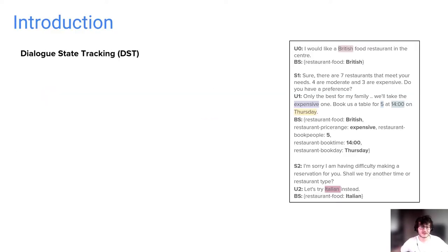Dialogue state tracking is the task of extracting the key preferences of a user at each turn in an ongoing task-oriented dialogue. This set of attributes are called the belief state. For example, on the right hand side you see a restaurant booking dialogue and highlighted are the preferences of the user regarding the booking.